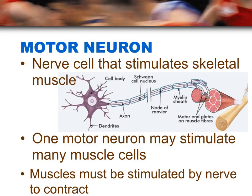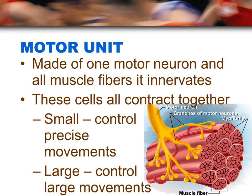One motor neuron can stimulate many muscle cells at one time. A muscle needs to have a nerve impulse generated by a motor neuron in order to contract. A motor unit is made up of one motor neuron and all the muscle fibers that it innervates — meaning the nerve impulse is associated with that muscle in order to control it.